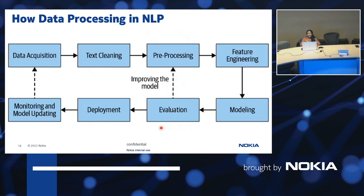How does data processing happen in NLP? The first thing is data acquisition — we need to have the complete data. Then we do text cleaning. The third step is preprocessing, which involves many steps: removing punctuation marks, spaces, and stop words like 'a', 'and', 'the'. Next is feature engineering — the process of extracting meaningful information from raw data to make it usable for machine learning models, converting raw data into what the machine can learn.